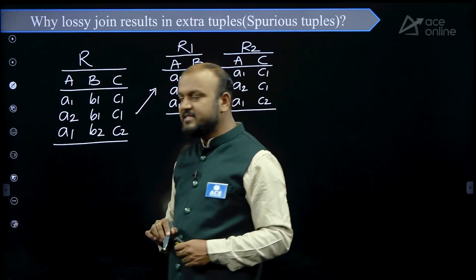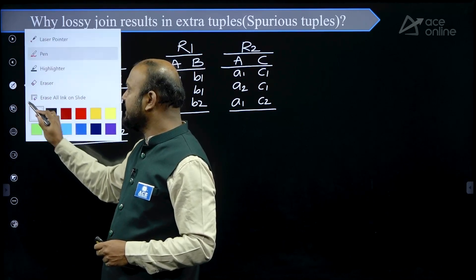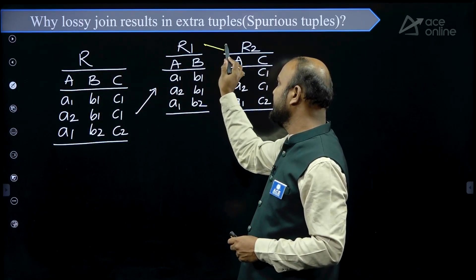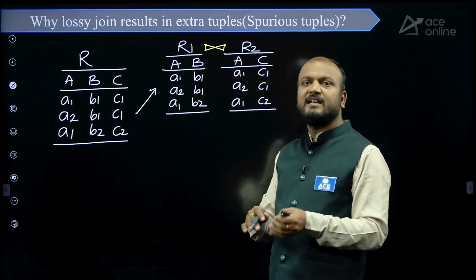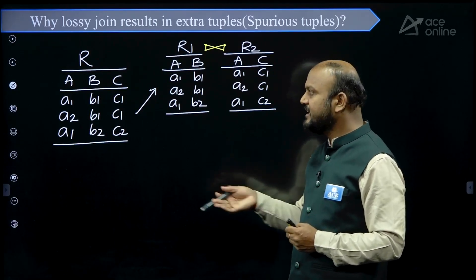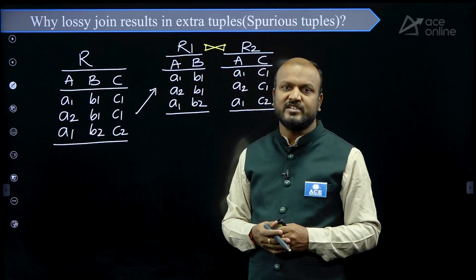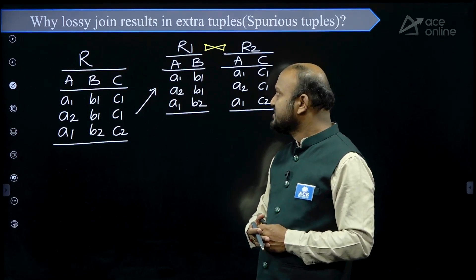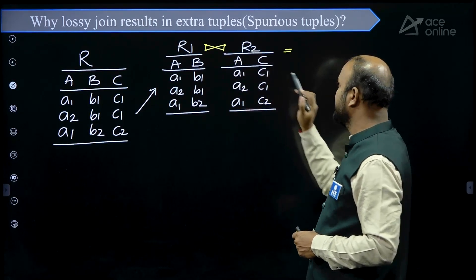Now the question is, is this decomposition lossy or lossless? How do we verify that? Simple — we have to join these two tables and get the resultant table. If the resultant table contains the same tuples as the original relation, then the decomposition is lossless. Otherwise, we can say the decomposition is lossy. So to verify this, we have to perform a join between the two tables.